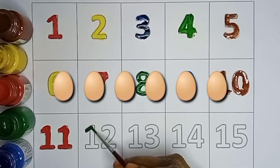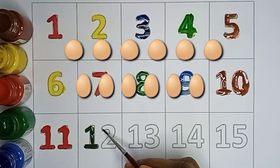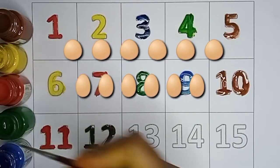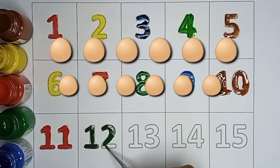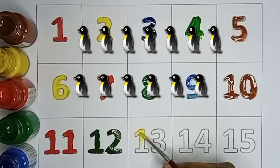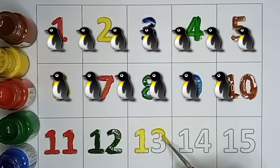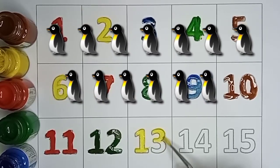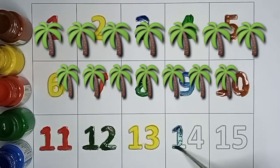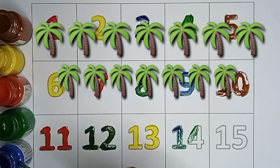Black color. Twelve, twelve eggs. Yellow color. Thirteen, thirteen penguins. Green color. Fourteen, fourteen trees.